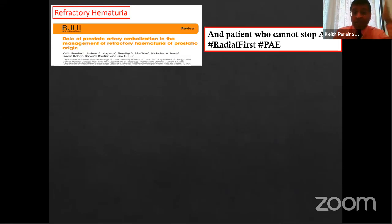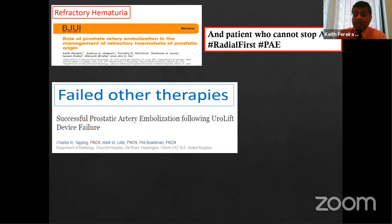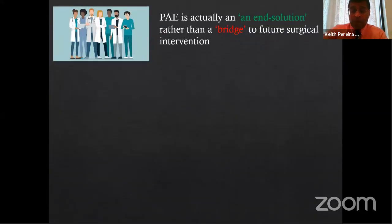Refractory hematuria was actually my first referral from a urologist — it's a huge pain to manage. You do continuous bladder irrigation and nothing stops the bleeding. Embolization is very effective in this setting; I published a review article in BJUI with urology colleagues confirming its efficacy. Added to that: patients on anticoagulation — going via radial artery means you don't need to stop anticoagulants. I've done PAE on patients on warfarin and antiplatelet therapy. Approaching PAE this way — complementing urology — is far better than trying to compete.